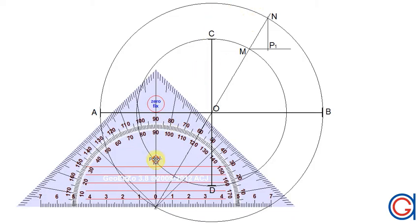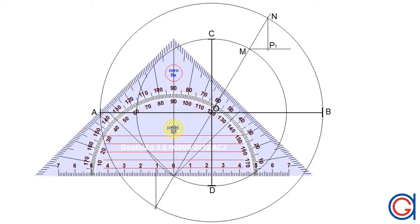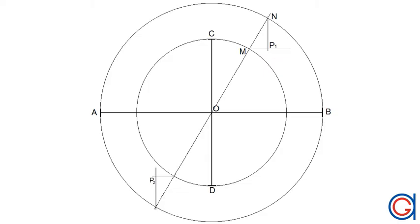And where it cuts the smaller circle, we draw a horizontal line perpendicular. And where these two lines cut each other, we will call point 2, which will be another point on our ellipse.